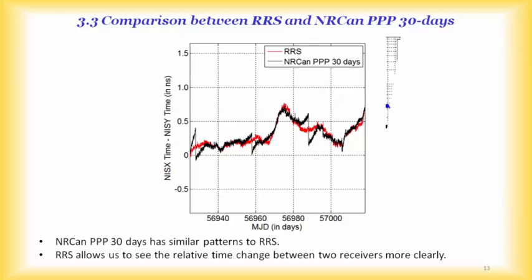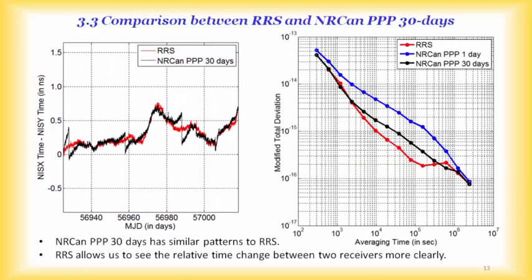This plot shows the modified total deviation (MDEV) of all three methods: RRS, NRCAM PVP one-day, and NRCAM PVP 30-day. RRS has the same short-term stability as NRCAM PVP 30-day, but achieves better long-term stability than NRCAM PVP 30-day because it removes the inter-batch jumps.